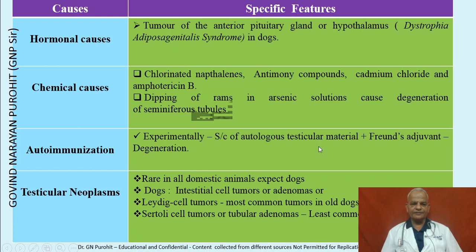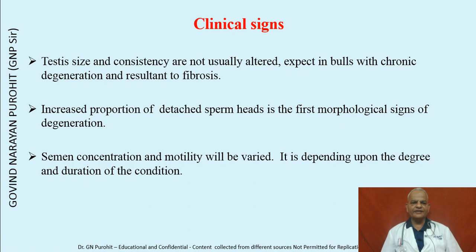Testicular neoplasms are rare in all domestic animals except dogs. In dogs, interstitial cell tumors (adenomas), Leydig cell tumors are common. Leydig cell tumor is the most common tumor in old dogs, and Sertoli cell tumor is the least common. The testis size and consistency are not altered except in bulls with chronic degeneration and resultant fibrosis.